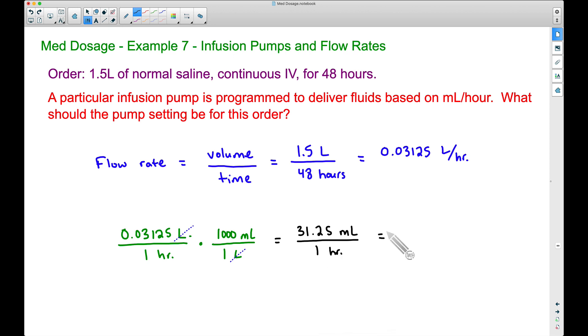Therefore, our flow rate setting for this infusion pump is going to be 31.25 milliliters per hour, but more than likely, most of the time, infusion pumps, you just set it to the nearest whole number. So we'll say right around 31 milliliters per hour.